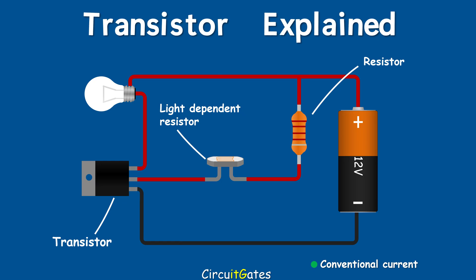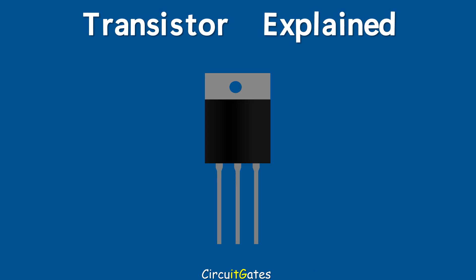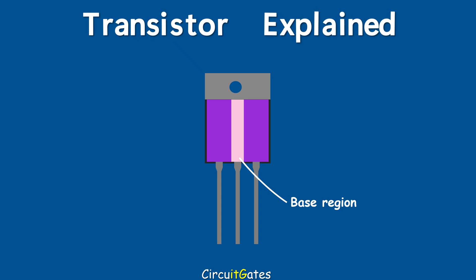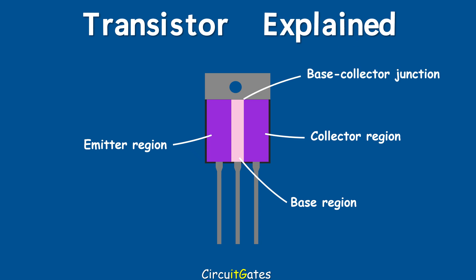Let us now look at transistor construction and how a transistor works. A BJT transistor is a device constructed with three doped semiconductor regions separated by two PN junctions. These regions are the base region, emitter region, and the collector region. The PN junction separating the base and collector regions is called the base-collector junction, and the PN junction separating the base and emitter regions is called the base-emitter junction. Each region has a lead for connection to the circuit.